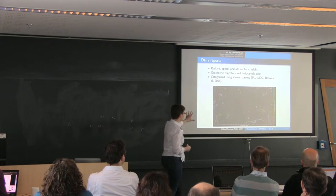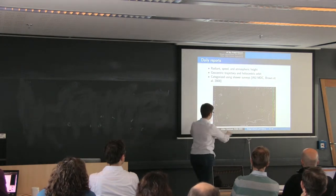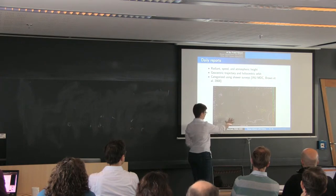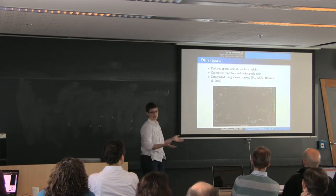This is one of our example outputs. This shows you, so this is a map of the US, and you can see the trajectories of the meteors relative to the ground, and this is all the meteors that were observed during one night during the peak of the Geminid meteor shower.